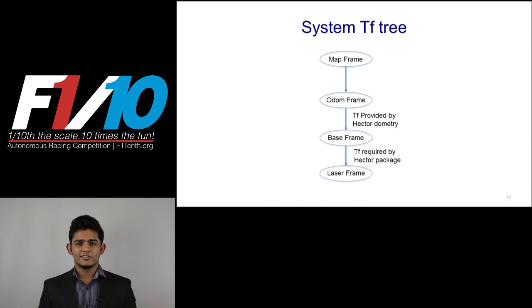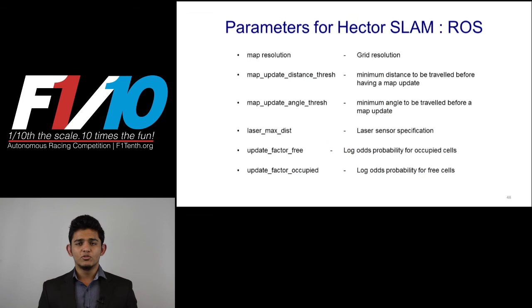You have seen the tree diagram in the previous lecture, haven't you? This is the transform tree for our system once the localization algorithm is implemented. The Hector odometry provides the transform between the odometry frame and the base frame.